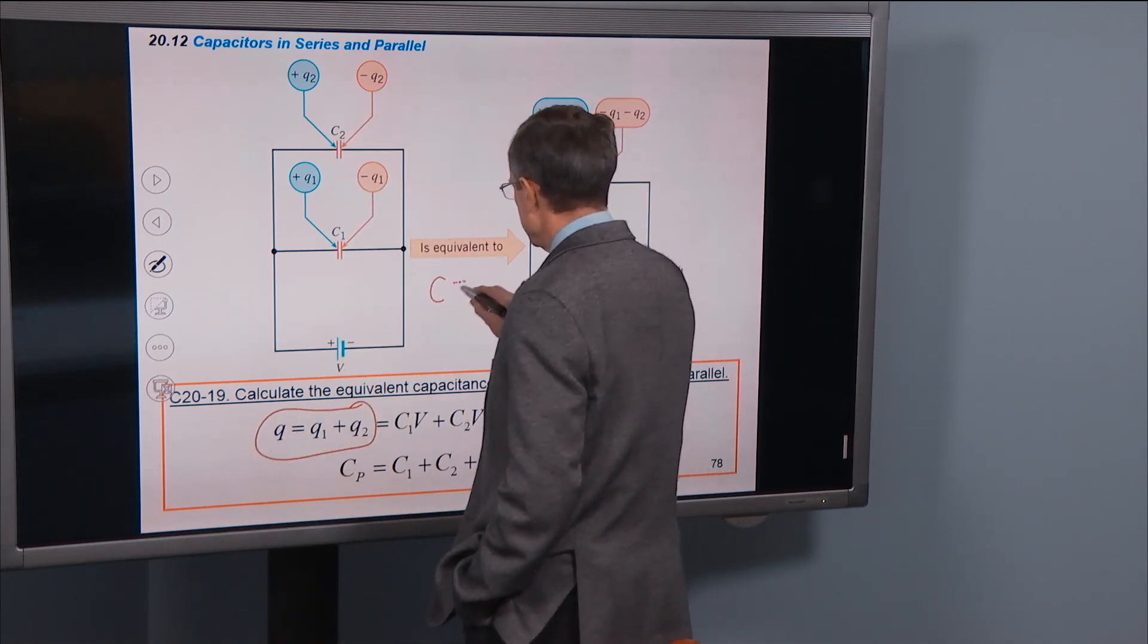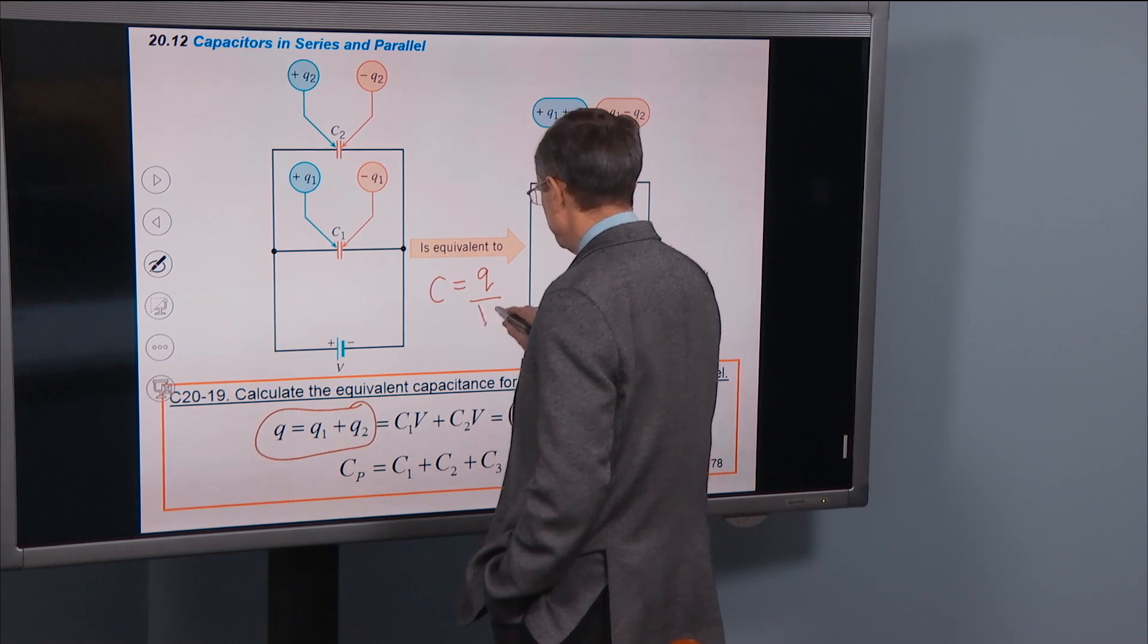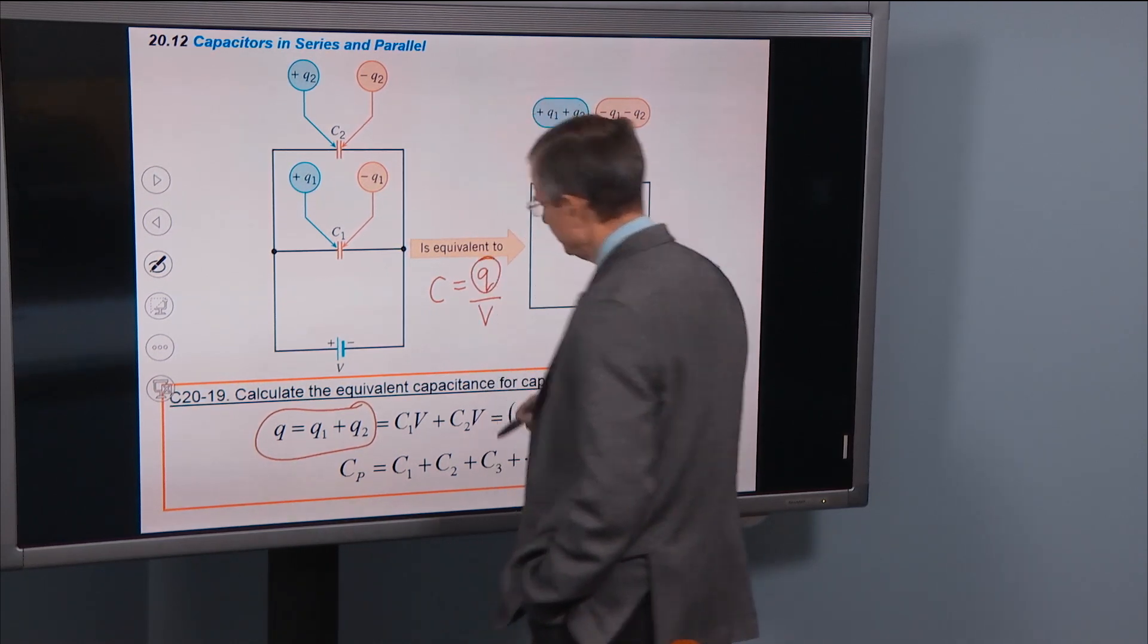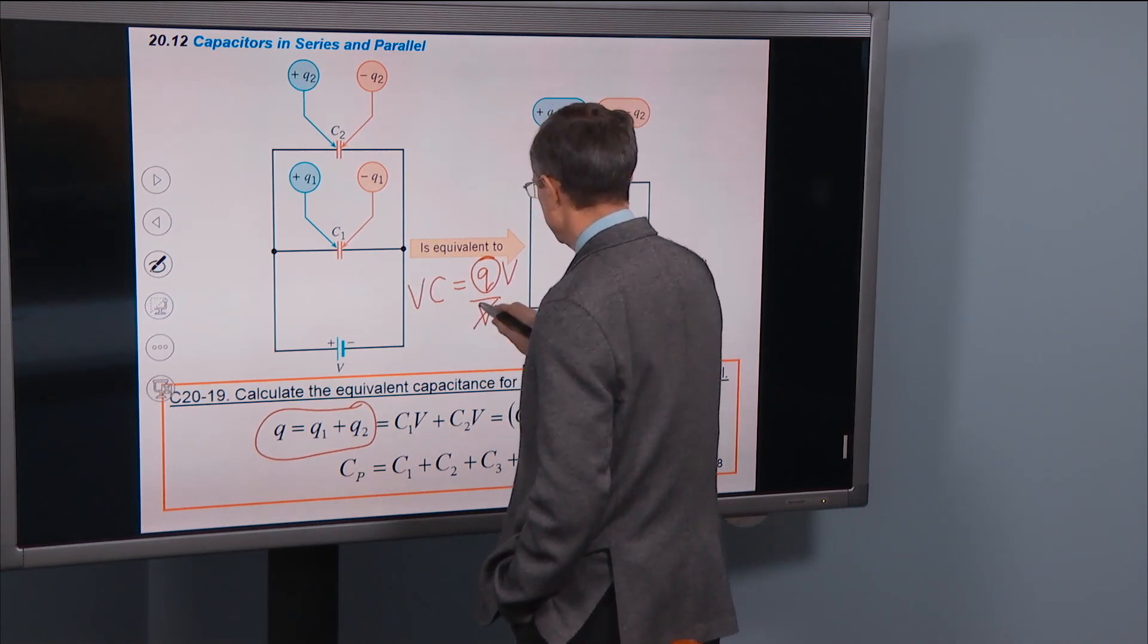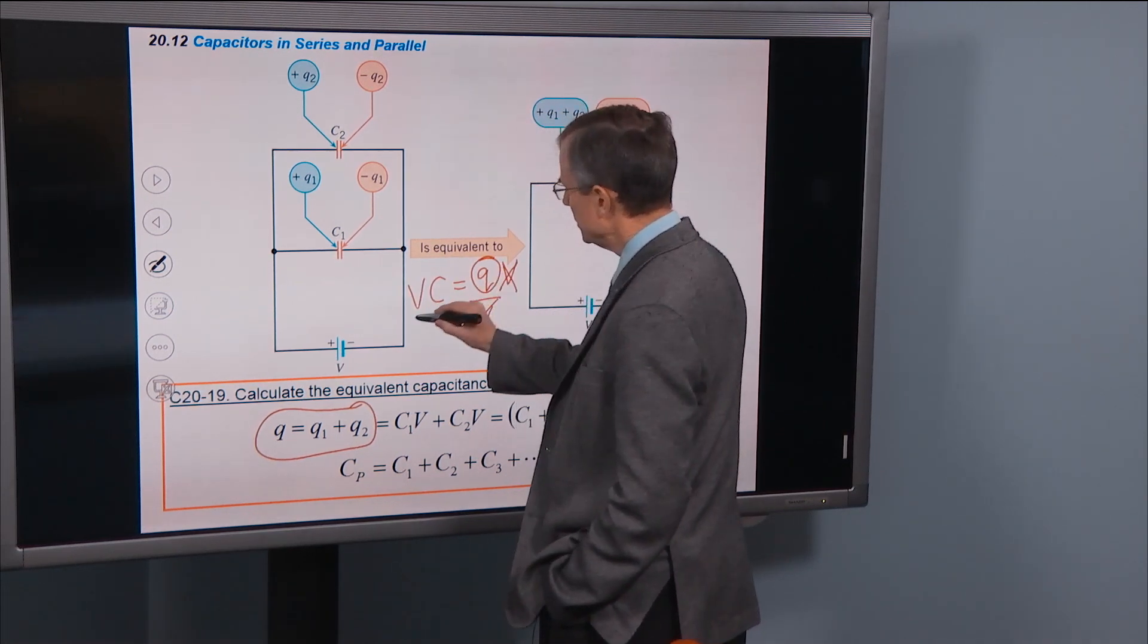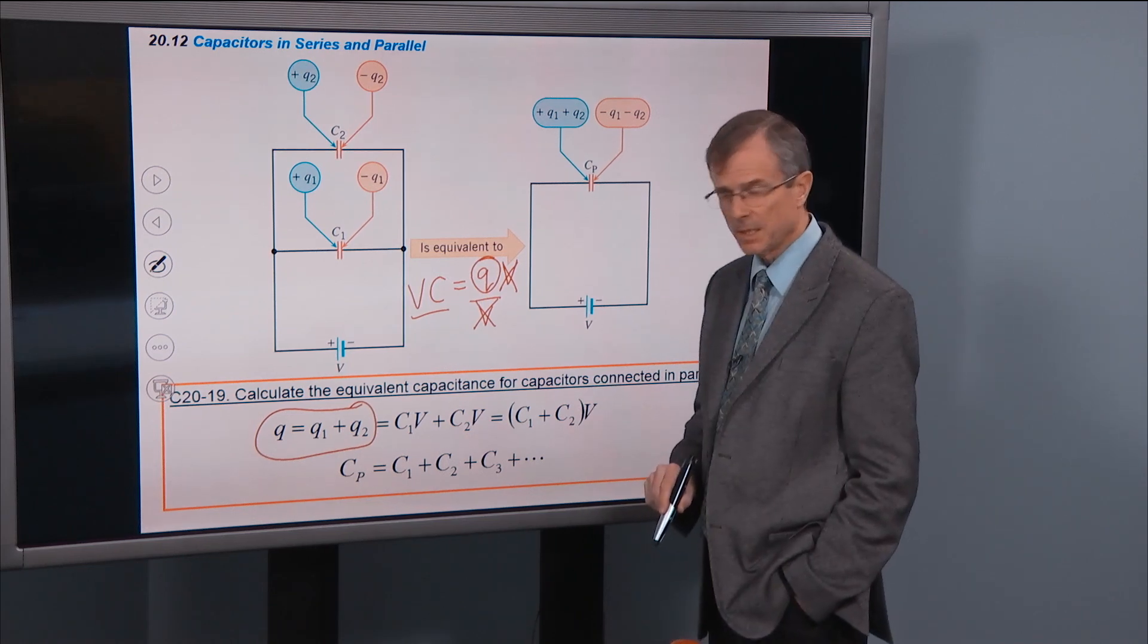Since c is q over v, the charge, you can solve for the charge by multiplying both sides by the voltage. And the charge is c times v.